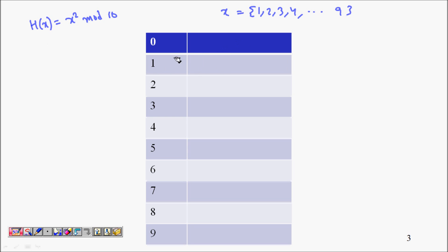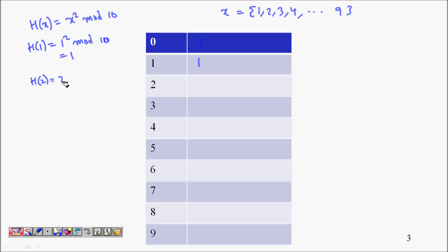h(1) = 1² mod 10 = 1, so 1 is placed at cell 1. h(2) = 2² mod 10 = 4, so 2 is placed at cell 4.